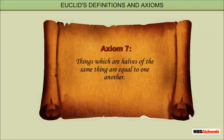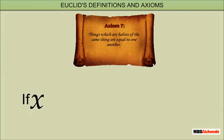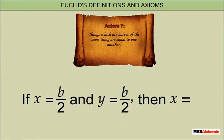Axiom 7: Things which are halves of the same thing are equal to one another. Example: if x is equal to B upon 2 and y is equal to B upon 2, then x is equal to y.